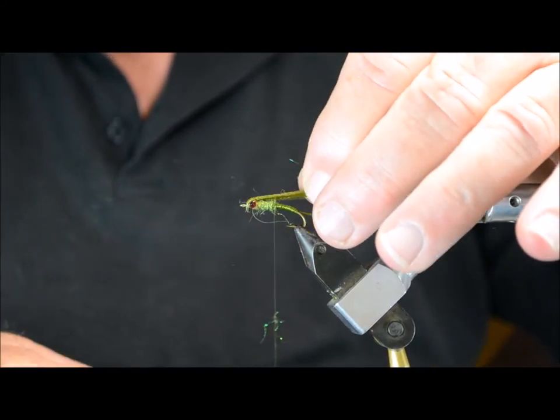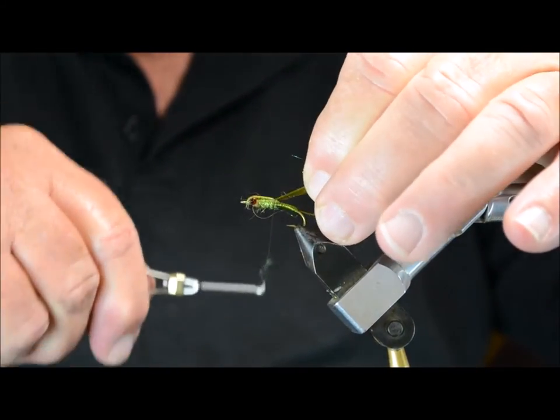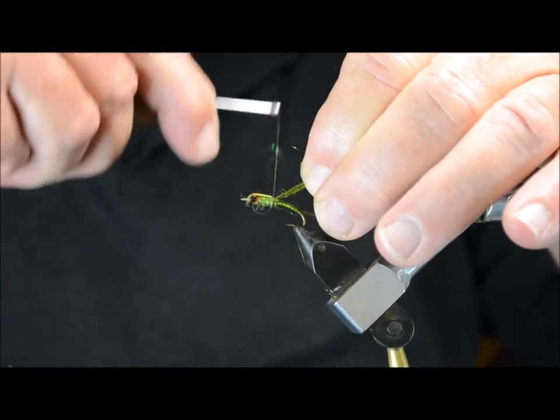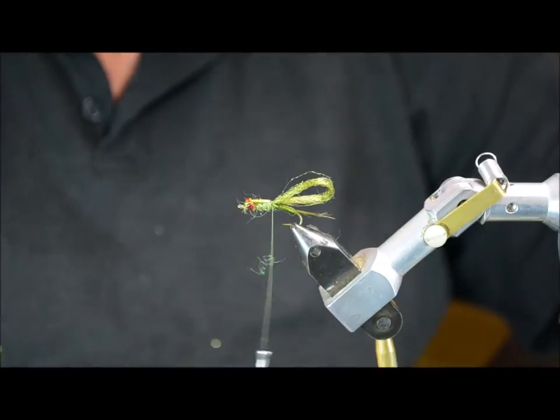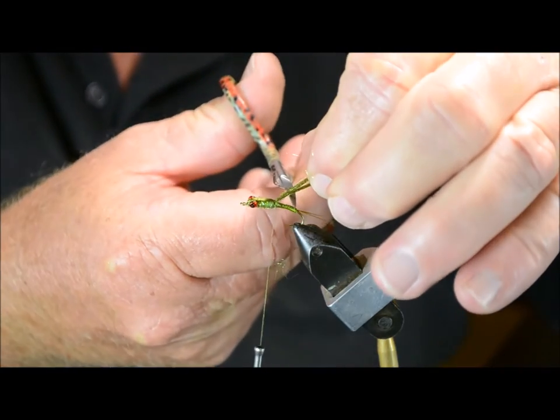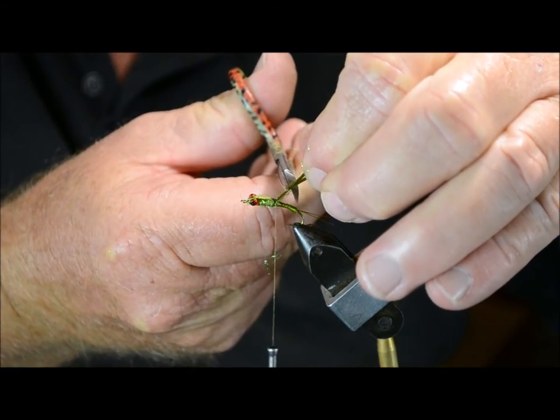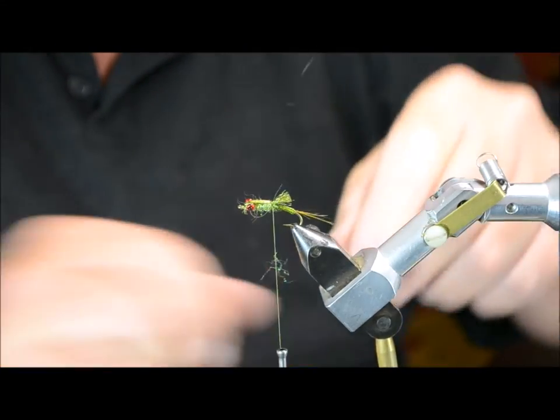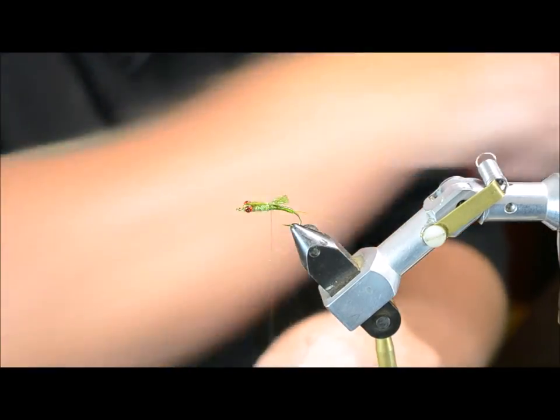And pull over this Antron. Tie it down. Trim off this little piece up here. This part of the wing. And then tie the fly off.